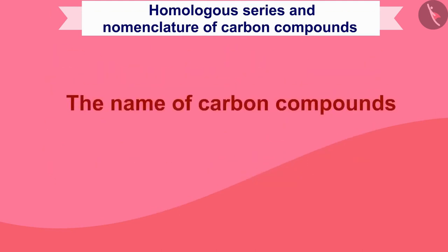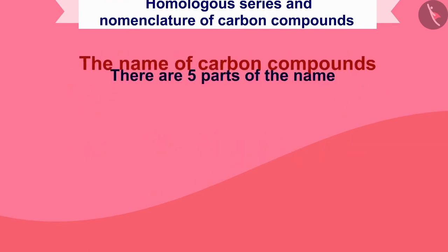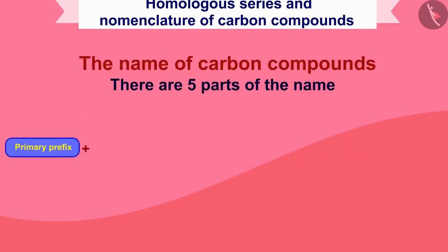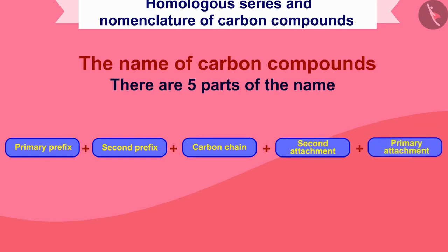Similarly, the name of a carbon compound is also divided into 5 parts. The first part is the primary prefix, then comes the secondary prefix, then comes the carbon chain, then comes the secondary suffix which joins behind the name, and then comes the primary suffix.